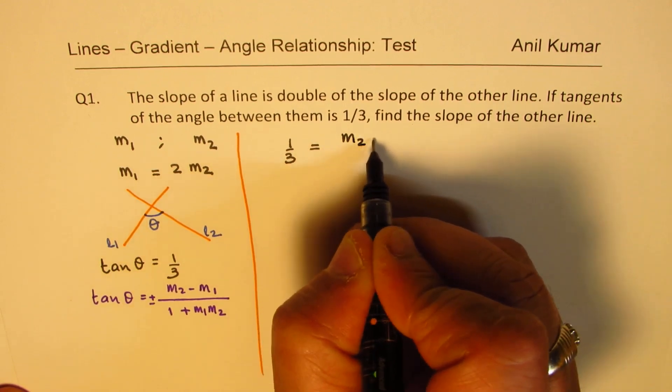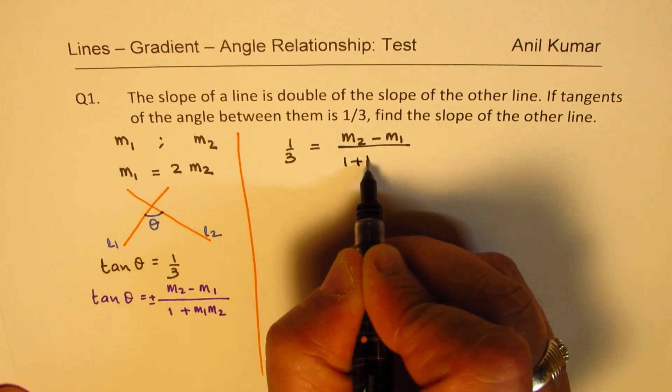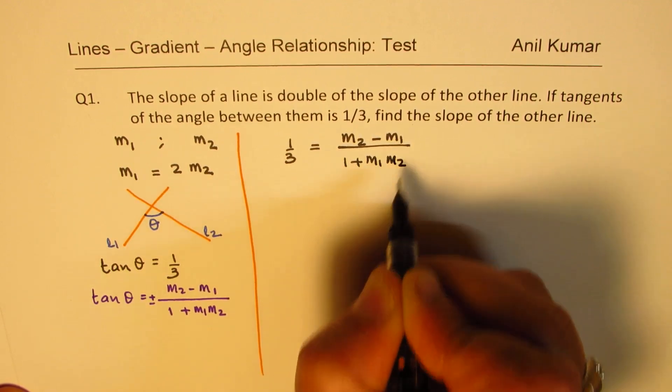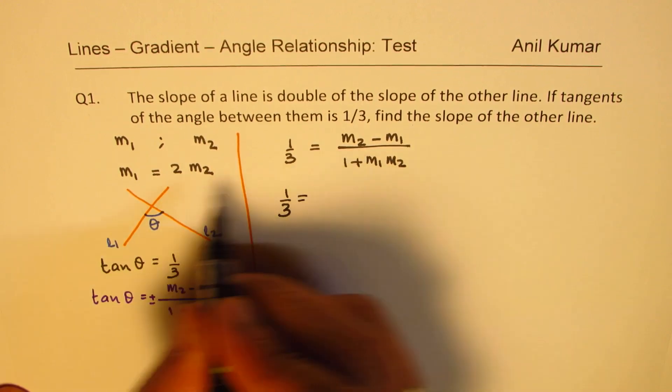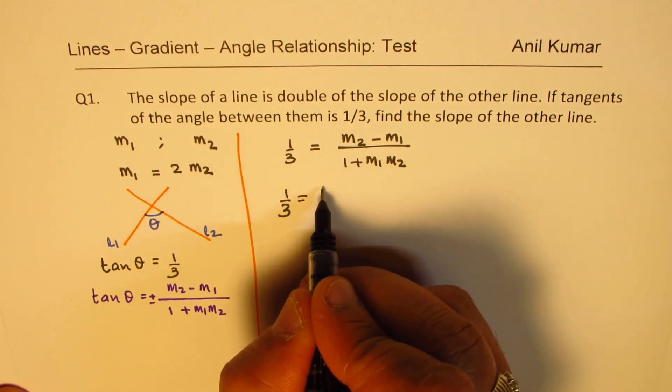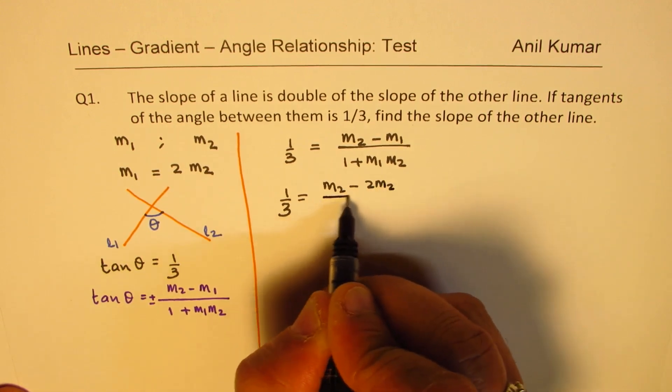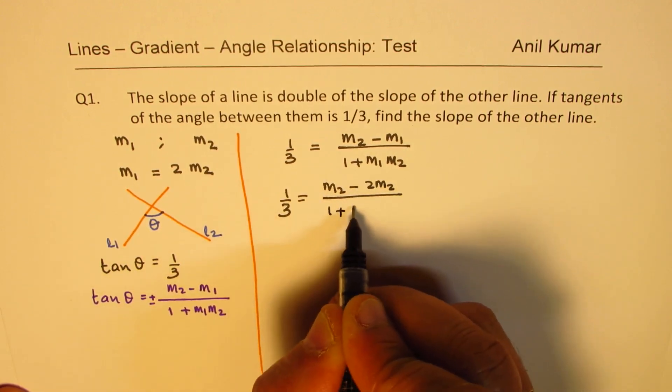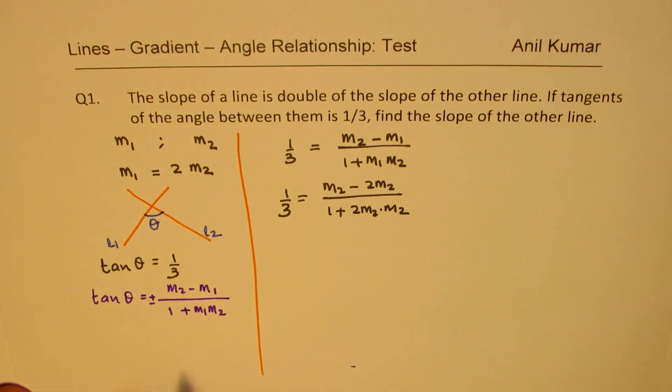let me write formula first, m2 minus m1 over 1 plus m1 m2. But what we know here is that m1 is 2 times m2, so I could write this as 2 times m2 for m1. So, we get 1 plus 2 times m2 times m2.